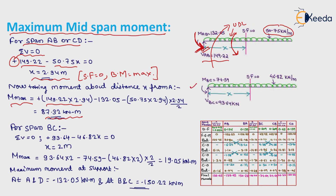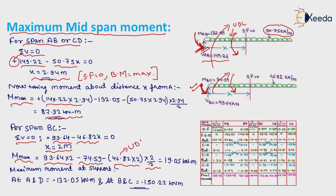For span BC, similarly we calculate x where shear force is zero: 93.64 − 46.82x = 0, giving x = 2 meter. M_max = 93.64 × 2 − 74.59 − 46.82 × 2 × 2/2 = 19.05 kNm.